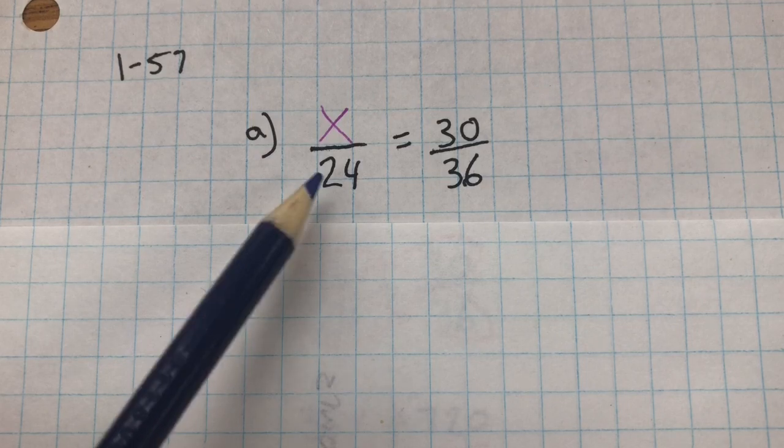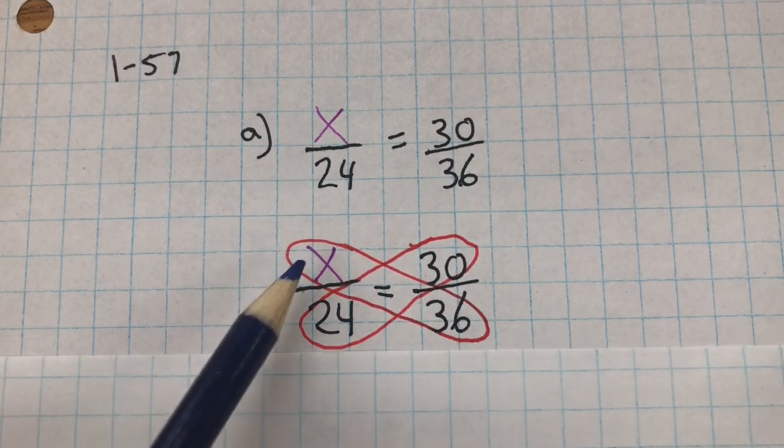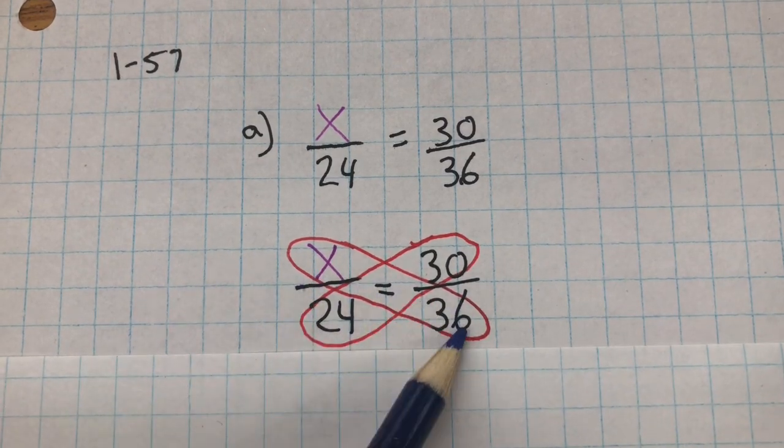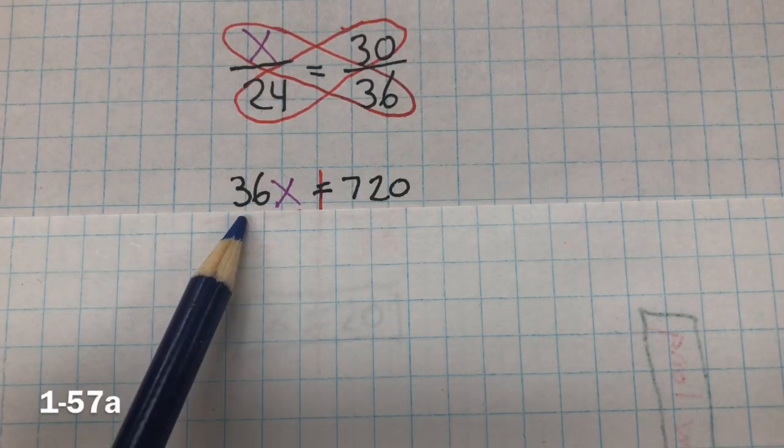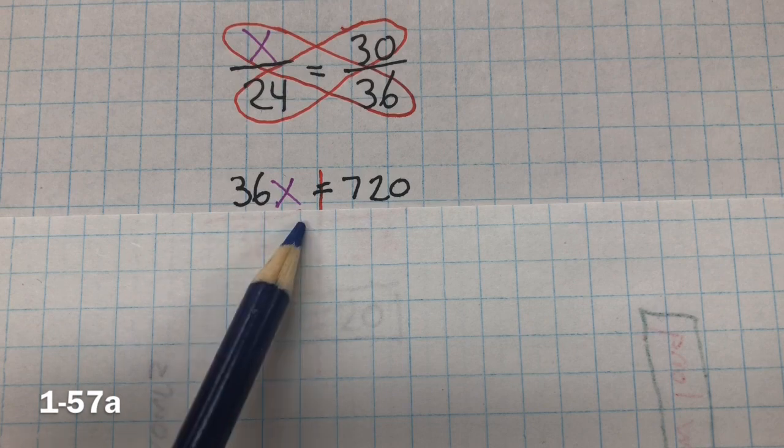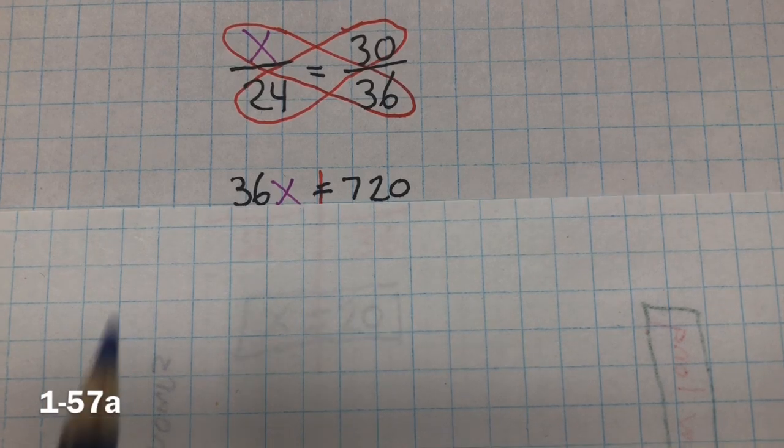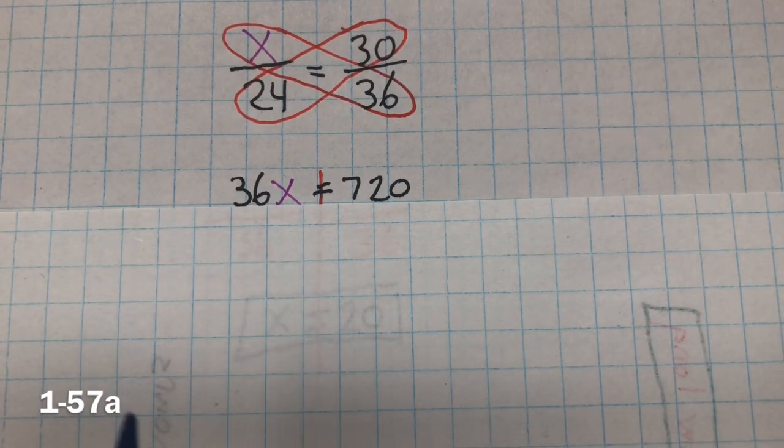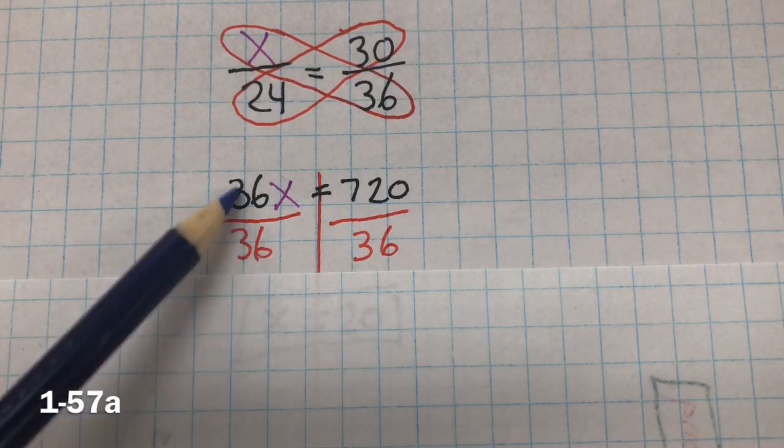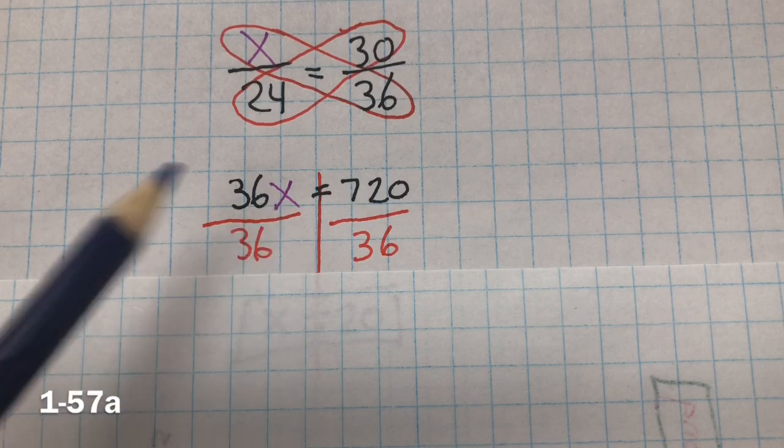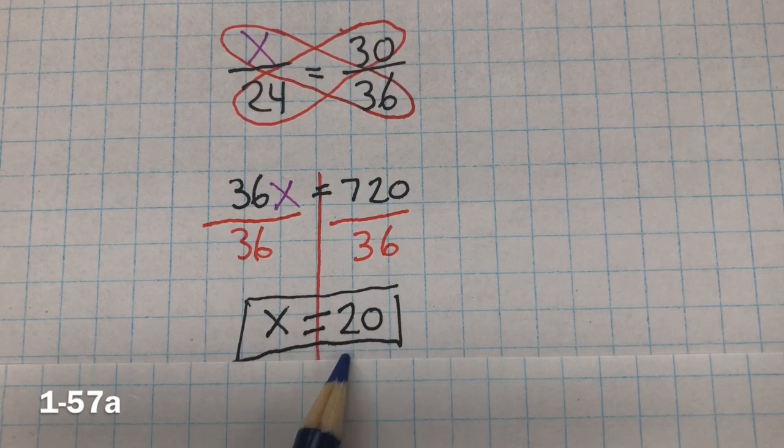One way to solve proportions is by cross-multiplying. So we have x multiplied by 36 and 24 multiplied by 30. x multiplied by 36 is 36x. 24 multiplied by 30 is 720. Inverse property of multiplication, we want to get x by itself. This is division, so we divide both sides by 36. We created a giant 1 here. 1 multiplied by x is x. 720 divided by 36 is 20.